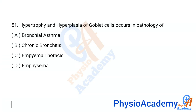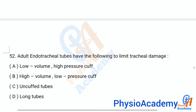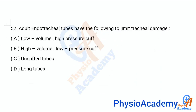Question 51: Hypertrophy and hyperplasia of goblet cells occurs in the pathology of which option? Option A: bronchial asthma. Option B: chronic bronchitis. Option C: empyema thoracis. Option D: empyema. The correct answer is option B, chronic bronchitis.